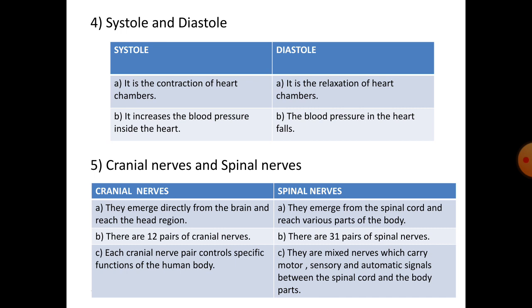Number five: cranial nerves and spinal nerves. Cranial nerves emerge directly from the brain and reach the head region; there are 12 pairs, and each pair controls specific functions of the human body. Spinal nerves emerge from the spinal cord and reach various parts of the body; there are 31 pairs, and they are mixed nerves which carry motor, sensory, and automatic signals between the spinal cord and body parts.